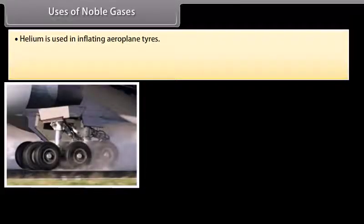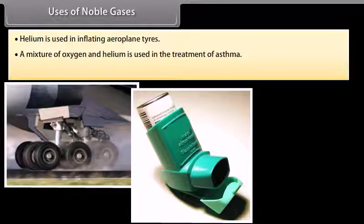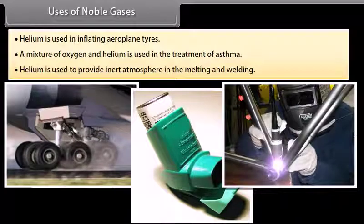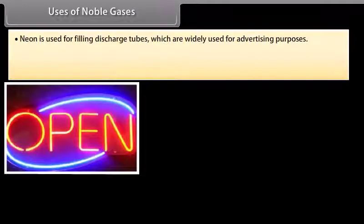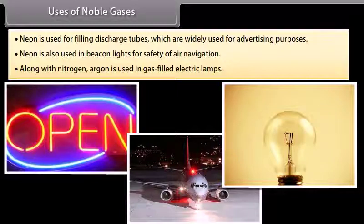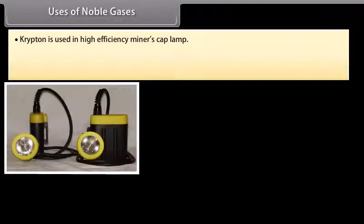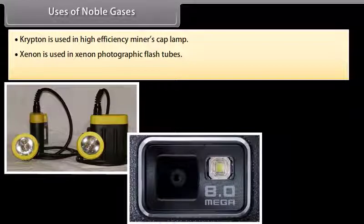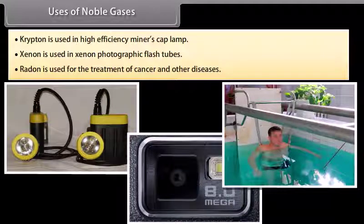Uses of noble gases: Because of the lightness of helium, it is used in inflating aeroplane tires. A mixture of oxygen and helium is used in the treatment of asthma. Helium provides an inert atmosphere in melting and welding. Neon is used for filling discharge tubes for advertising purposes and in beacon lights for air navigation due to its fog- and storm-penetrating power. Along with nitrogen, argon is used in gas-filled electric lamps. Krypton is used in high-efficiency miners' cap lamps. Xenon is used in photographic flash tubes. Radon is used for treatment of cancer and other diseases.